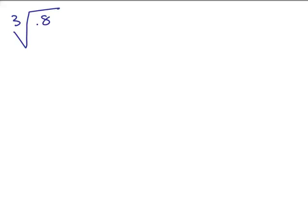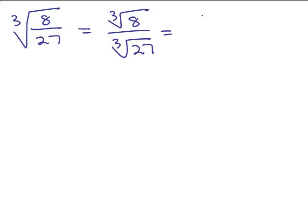The cube root of 8/27, you could say, well, that's the cube root of 8 over the cube root of 27. The cube root of 8 is 2 and the cube root of 27 is 3.